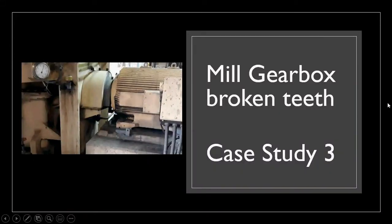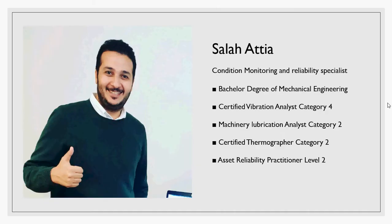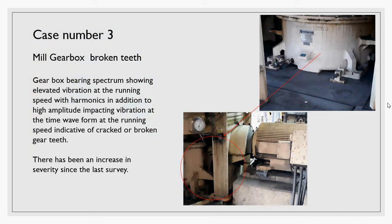Hello everyone, today this is case study number three. It's about the mill gearbox broken teeth. One of the teeth of the gearbox was broken, so let's see what happened. The gearbox bearing spectrum was showing elevated vibration.